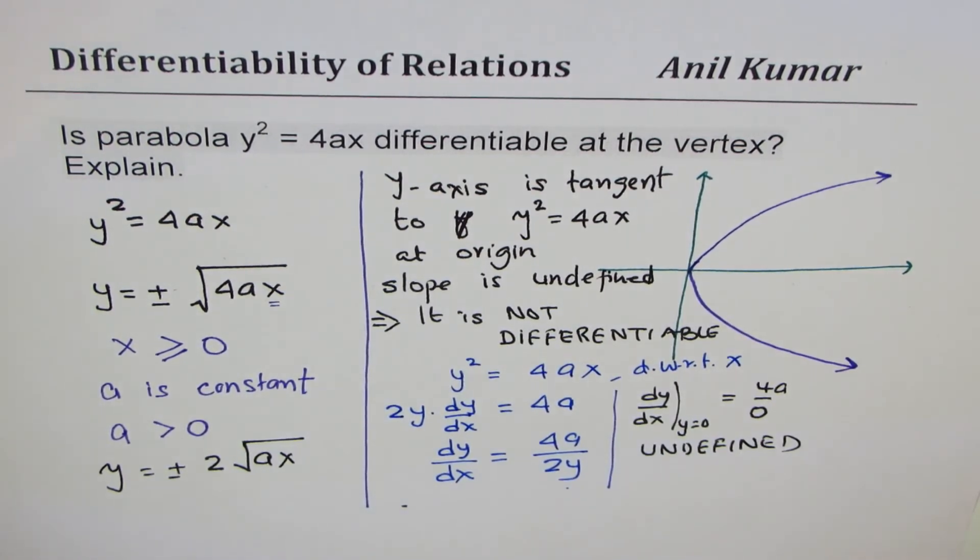So you can also show this algebraically. It all depends on what you have learned. We did here implicit differentiation and got our result. So I hope that helps. This is one of the two ways in which you can show why y² = 4ax is not differentiable at the origin.